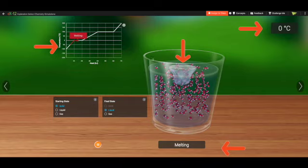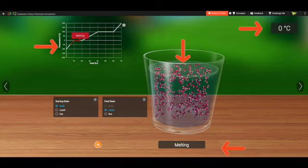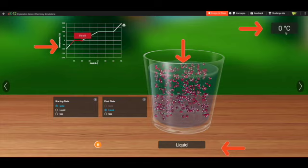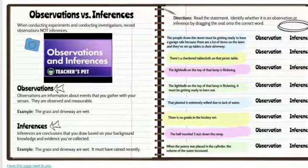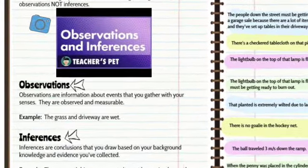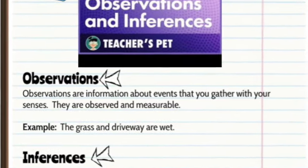Whether you're using the notebook page or using this interactive for science class, these are the four locations to pay close attention to while you're making your observations. And just as a reminder, observations are information that you gather about events using your senses. These are observed and measurable things.